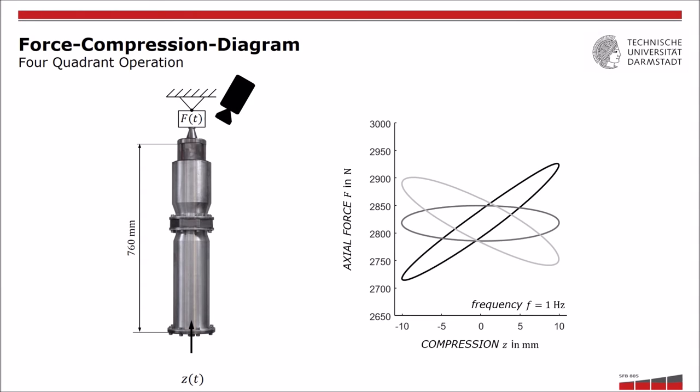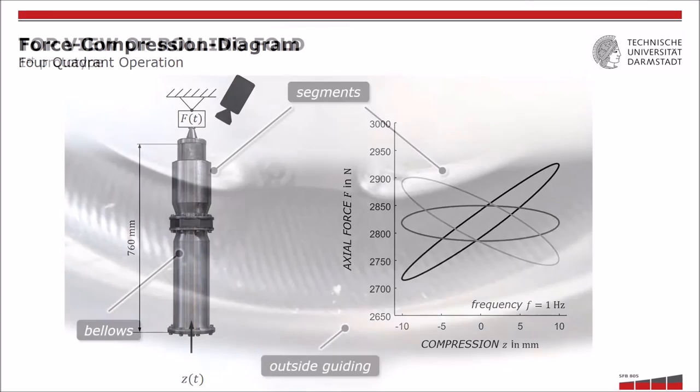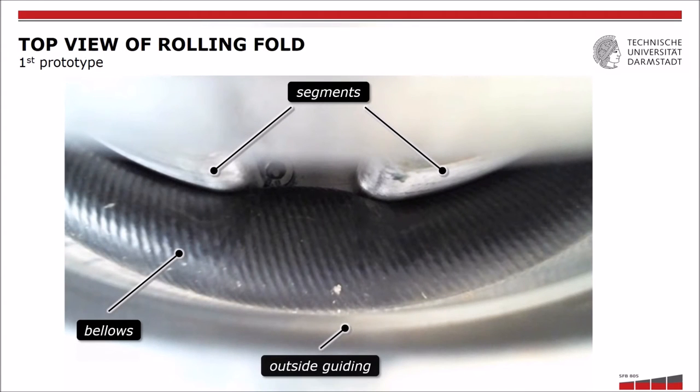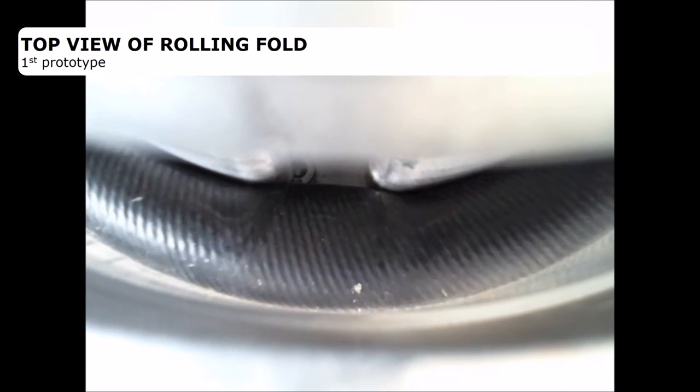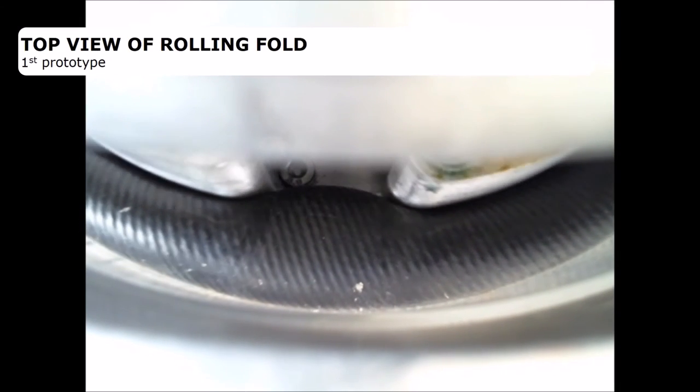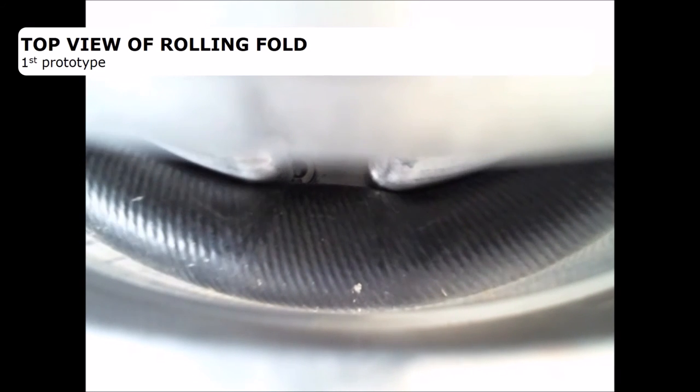Now let's take a closer look from the top of the air spring. In this top view, you can see the bellows at the top of the system along with the metal segments that are attached to the active piston. Four of these segments are evenly distributed along the piston's circumference. As these segments push on the bellows, the load carrying area of the air spring is increased.